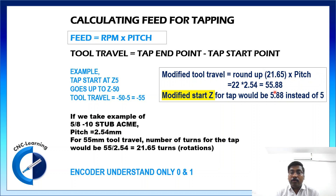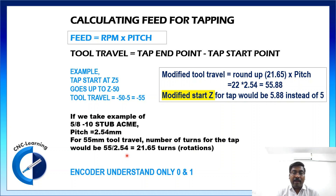If we multiply 22 by the pitch — 22 × 2.54 — we get 55.88 mm. So the modified tap start Z would be 5.88 instead of 5. Now if you divide 55.88 by 2.54, you get exactly 22 — 22 complete turns. This means the encoder will have no difficulty completing the turns and the result will be a good thread.